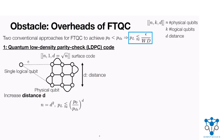One crucial obstacle for achieving FTQC is its overhead, which conventionally grows polylogarithmically on large scales. One commonly studied approach is to use quantum low-density parity-check codes, or LDPC codes. Quantum LDPC codes are code families where each stabilizer generator has constant weight and each physical qubit is involved in a constant number of stabilizer generators, such as surface code. Surface code uses n physical qubits to encode a single logical qubit, with distance equal to the square root of the number of physical qubits. With this code, we can suppress errors by increasing the distance, but this may require more physical qubits per logical qubit.